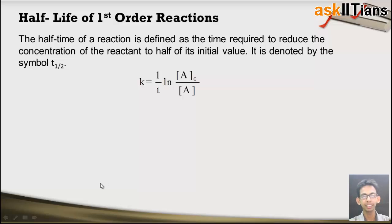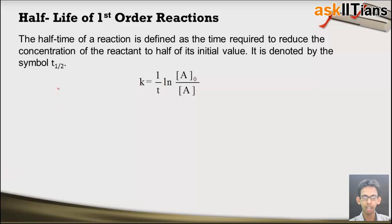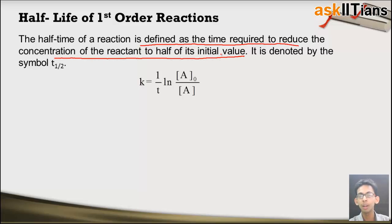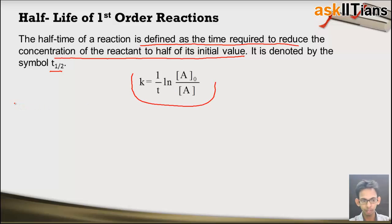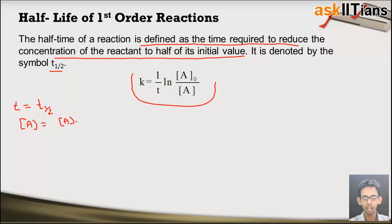The next topic is half life of a first order reaction. The half life is defined as the time required to reduce the concentration of the reactant to half of its initial value, denoted by T-half. At half life, time T equals T-half and the final concentration equals A0 over 2. Substituting these values into the integrated rate law gives us an expression for T-half.